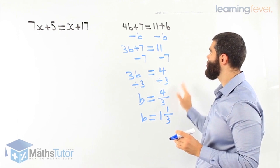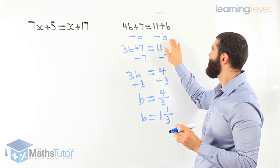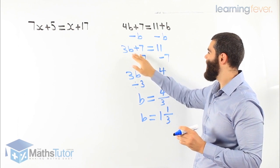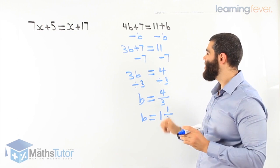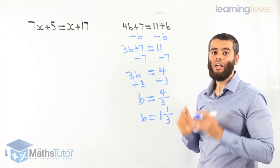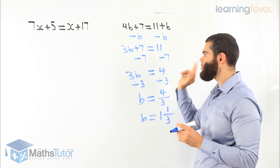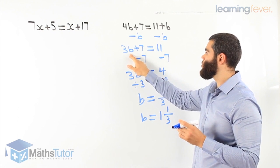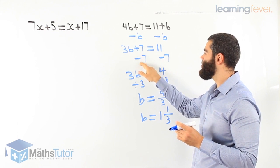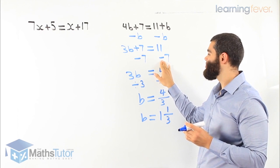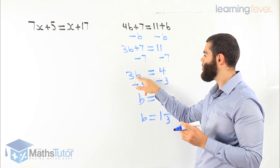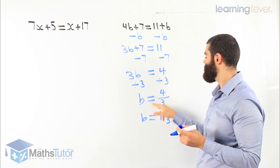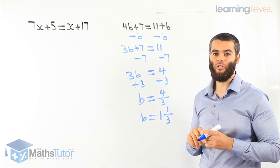So again, we make sure we take away and get rid of the pronumeral from the right side, so pronumerals are only on the left. Minus b, minus b. We have 3b plus 7 equals 11. We get rid of the one furthest away from the pronumeral first — that's the 7. Plus 7 becomes minus 7, minus 7 on the other side. We're left with 3b equals 4. 3b is 3 times b, so divide by 3 on both sides. b equals 4 over 3, which is 1 and 1 third. That's the answer.